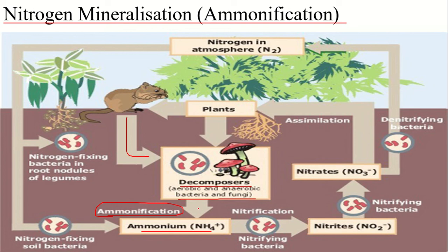Once in the form of ammonium, the nitrogen is made available for use by plants or for further transformation into nitrate through nitrification, and this entire process is known as nitrogen mineralization. So after ammonia is returned to the ecosystem, it can either be reintroduced into the food chain or proceed to the next step — nitrification.